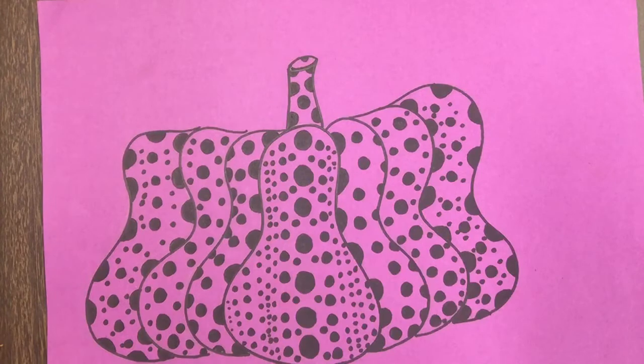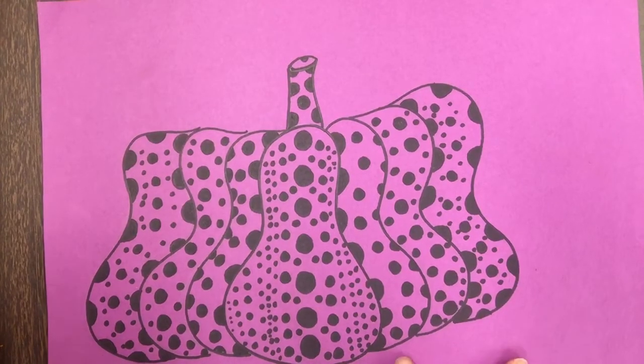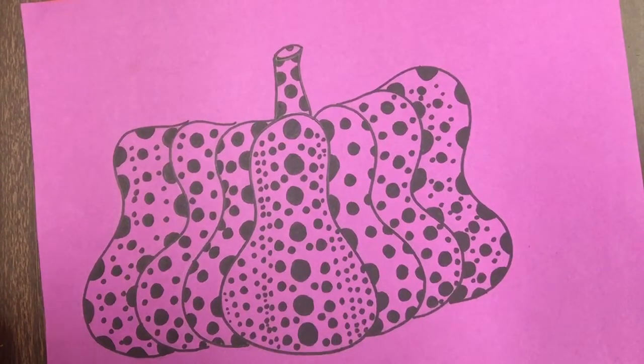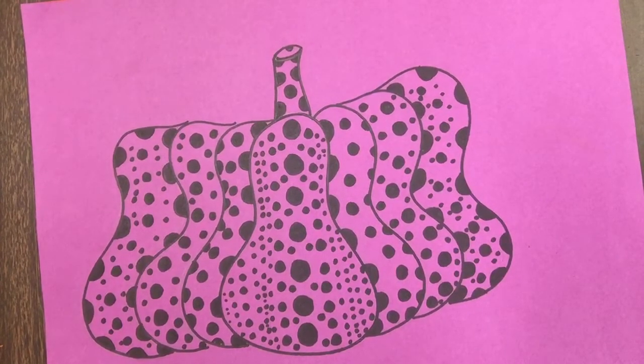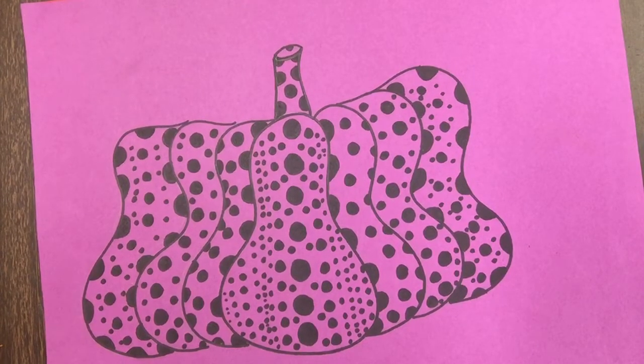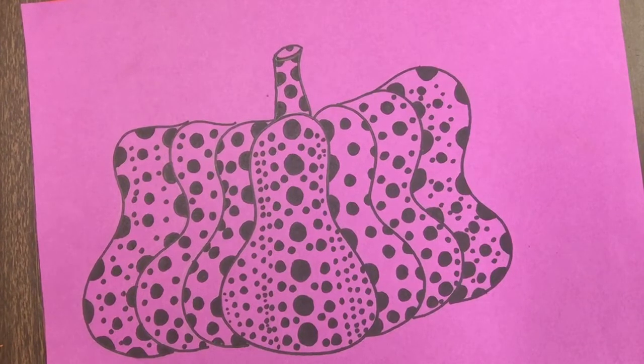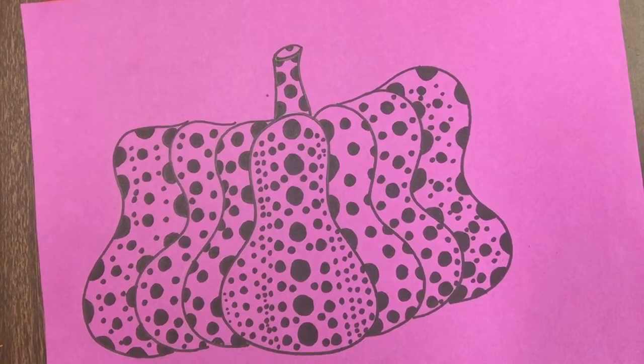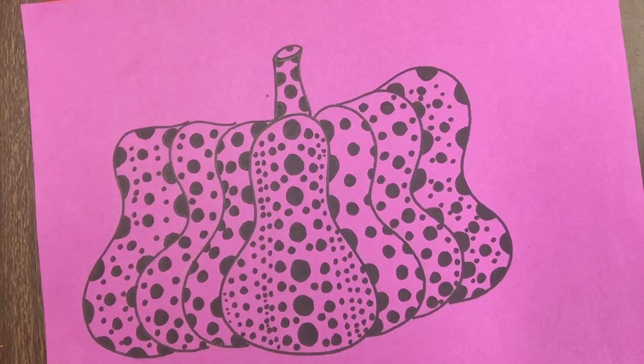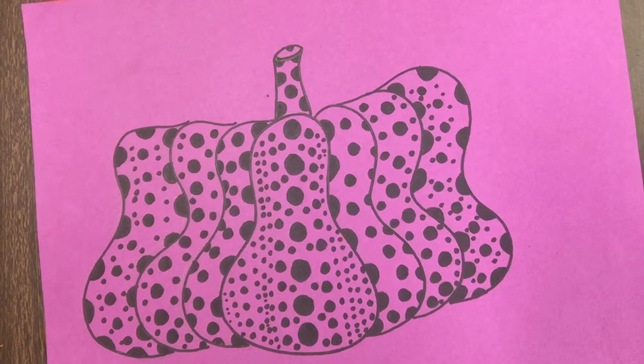This is my first example of my Yayoi Kusama pumpkin. Now, be thinking about how you want your pumpkin to look. What kind of pumpkin are you going to want to draw? Yayoi Kusama's pumpkins, and pumpkins actually in real life, they all come in different sizes and shapes. Some are wide and wobbly looking. Some are tall and skinny looking. So think about what kind of pumpkin you want to draw.